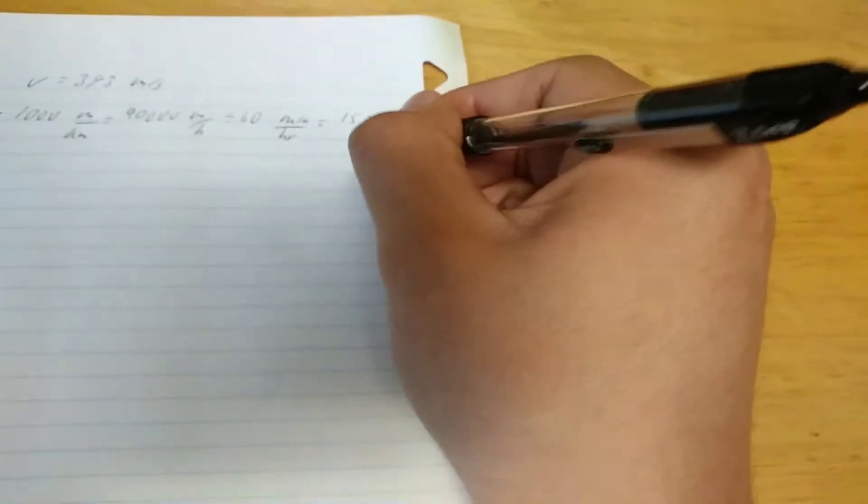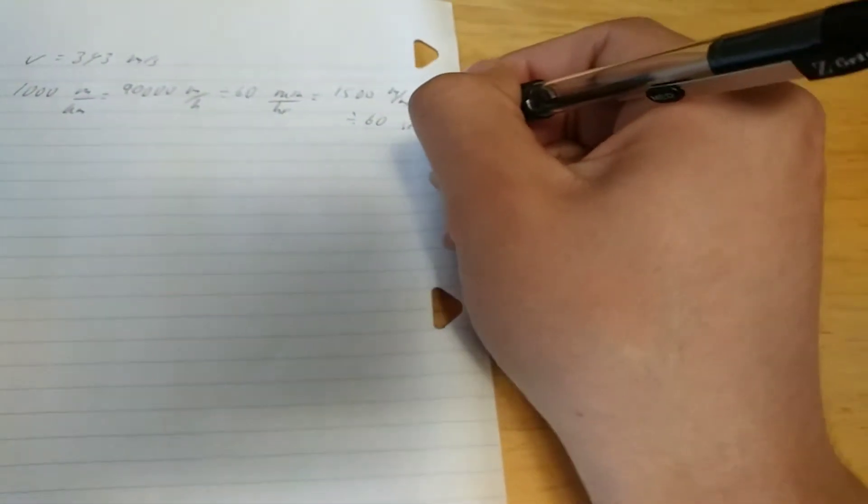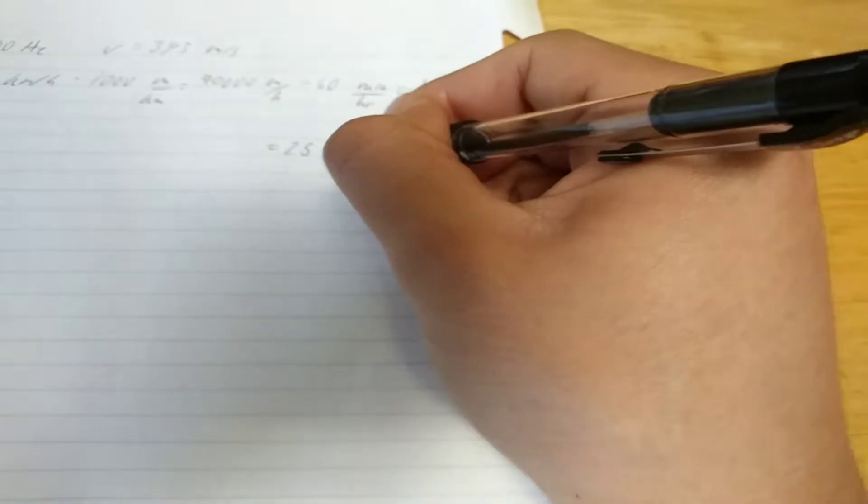And again, we divide this by 60 seconds per minute in order to get standard units of the velocity, which is now 25 meters per second.